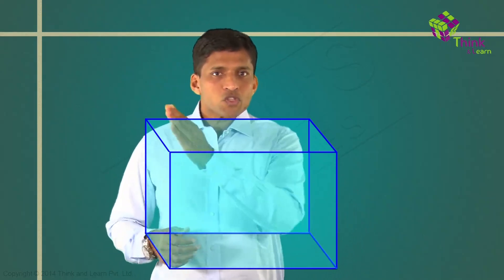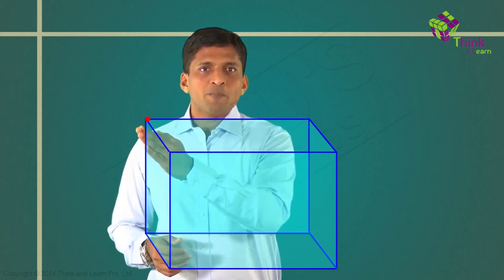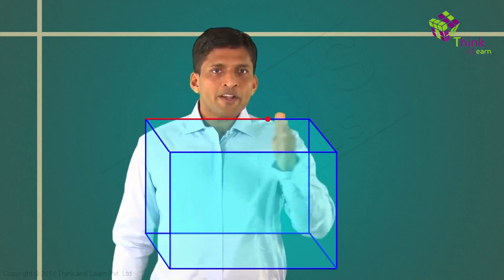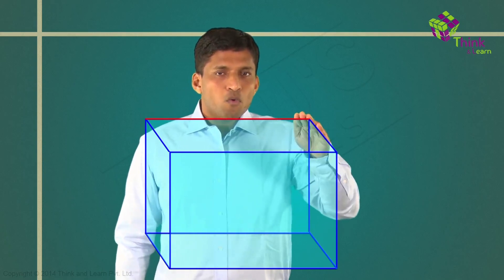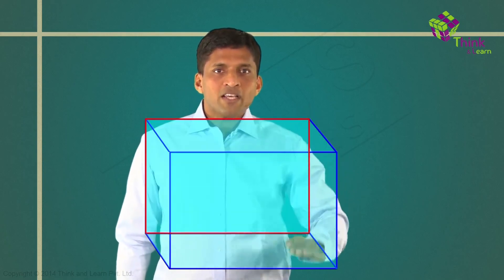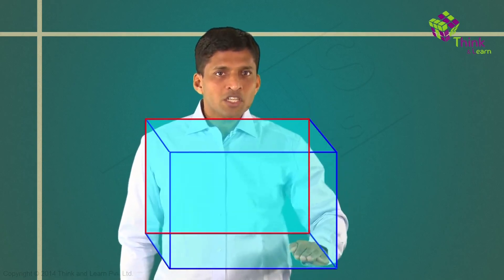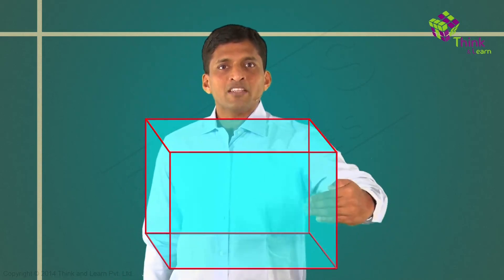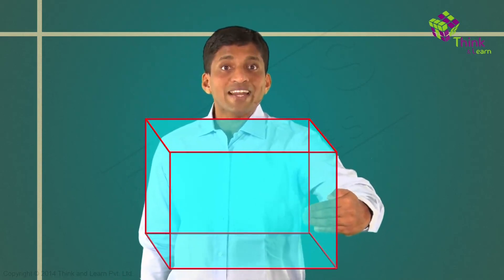Starting with the point, you move the point to get a line, move the line to get a plane — which is two-dimensional — and if I move the plane, I will get solids, which are three-dimensional.